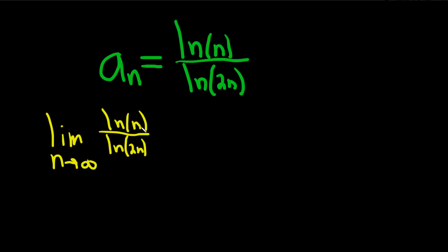We have a situation here — it's infinity over infinity — so it's a prime candidate for L'Hôpital's rule. Now the thing is you're not supposed to use L'Hôpital's rule when dealing with sequences. So what we're going to do is pretend for a moment that these are x values and use L'Hôpital's rule. There are situations where the limit will exist for sequences but not for real numbers, so just keep that in mind.